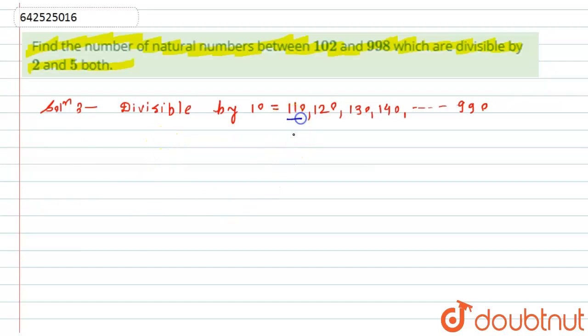In an AP, I will do: let the first term, means a, is nothing but 110. Similarly, the common difference for the AP will be d equals 120 minus 110, which will be equals to 10.